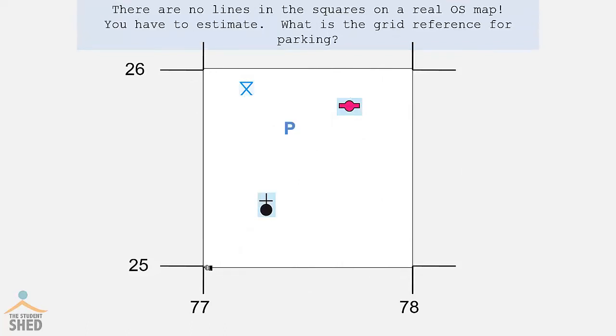Now let's put in parking. On a real OS map, there are no lines within the grid squares. So you'll have to estimate and figure out what you think the six-figure grid reference is based on the location of the object. So what is the grid reference for parking?